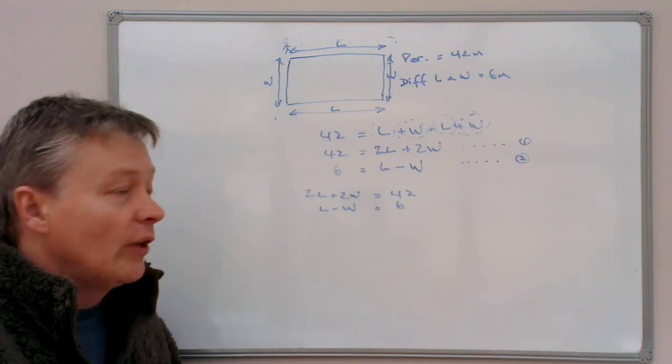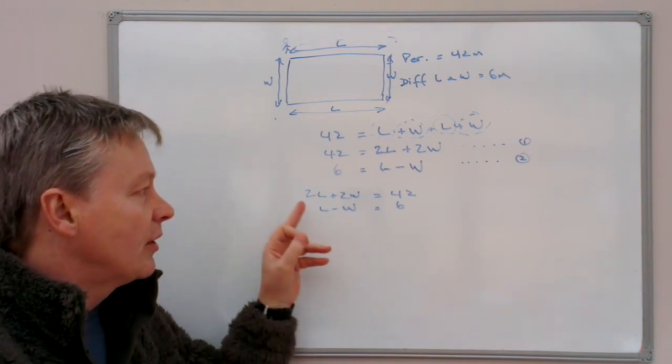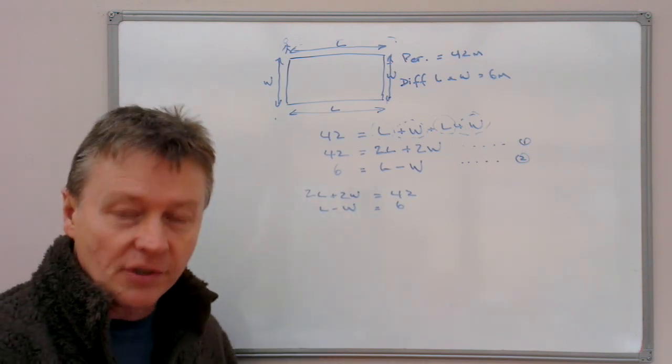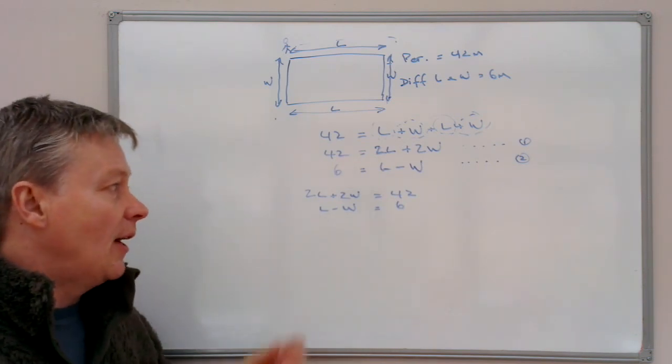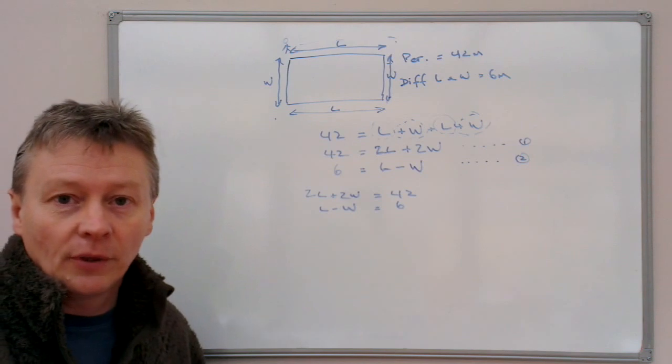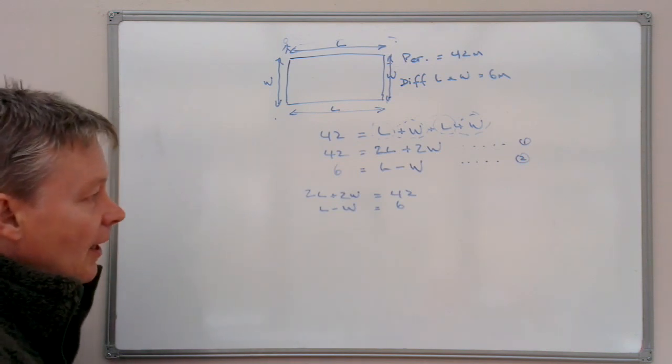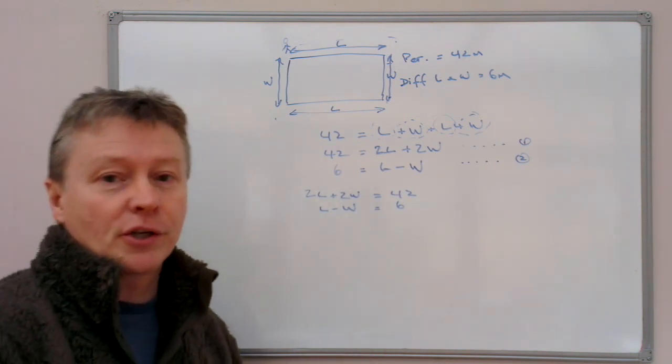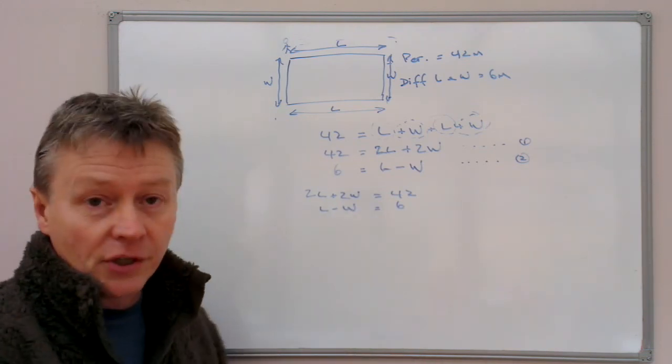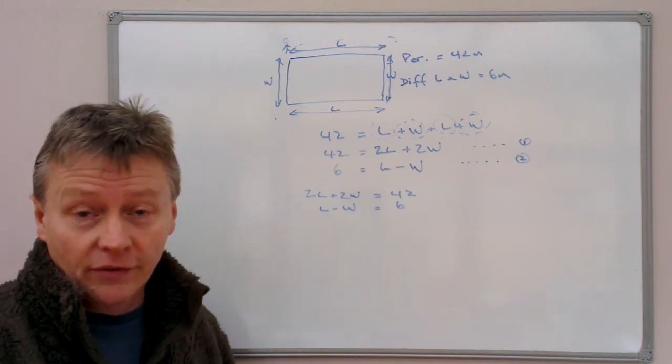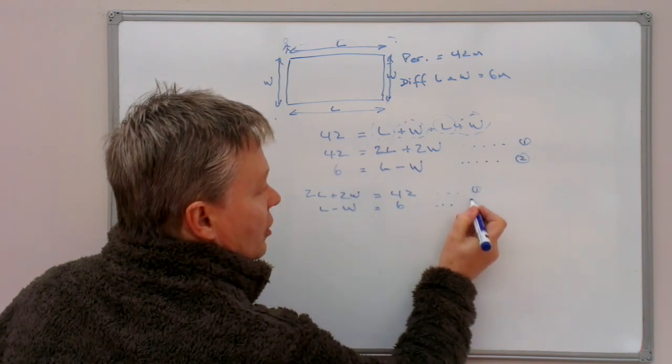And like before with simultaneous equations, the thing that you need to do is to find a way in which you can eliminate one of the terms, either the L terms or the W terms. That will then give you one of the terms left and that will enable you to calculate it. So looking at these two equations, I'm going to multiply the second equation by 2. Now if I do that, it means I get a value of 2L and a value of 2W, one or the other of which I can then eliminate. So this is equation one. And this is equation two.